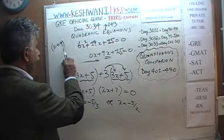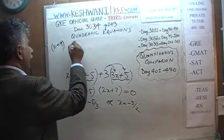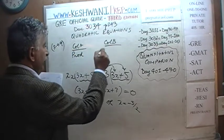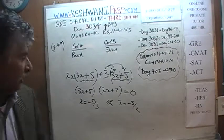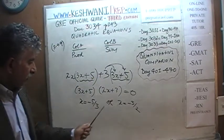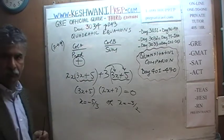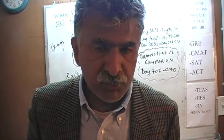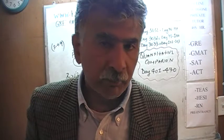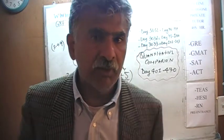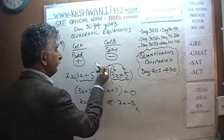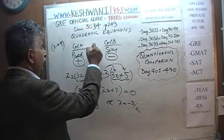Now we can finish. Column A is the product of the roots; column B is the sum of the roots. Since both roots are negative, the product is going to be positive. We don't need to compute it — these are quantitative comparison questions, not quantitative computation. The product of two negative quantities is positive. The sum of two negative quantities is negative. Therefore, a positive quantity is greater than a negative quantity. The answer is A.